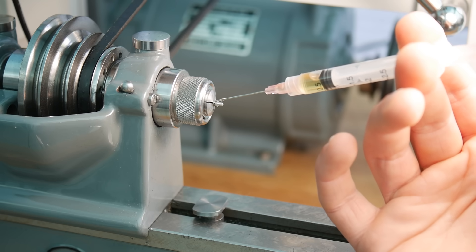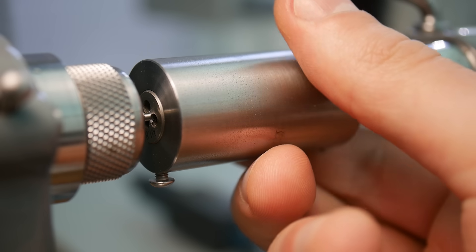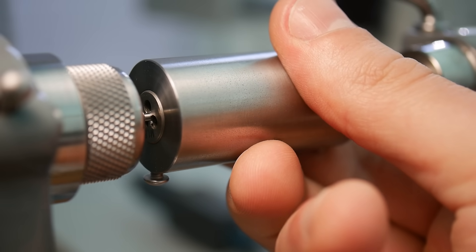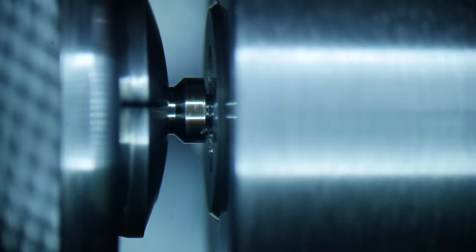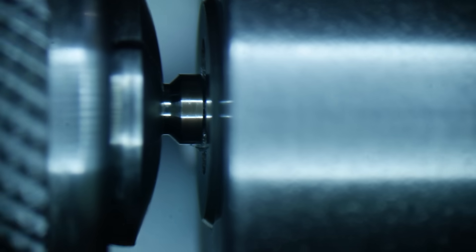One of the challenges when using a die to cut small threads is knowing when to stop. Ideally, the thread should finish as close to the shoulder as possible, but it can be easy to break the workpiece off in the die if we aren't careful. This is where the microscope comes in handy because I can zoom right into the shoulder as I bring the die to the end of the thread.